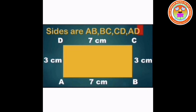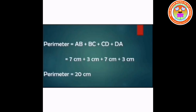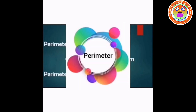For the rectangle, opposite sides are equal. Suppose AB is equal to 7 cm, then the opposite side DC is also 7 cm. BC is equal to 3 cm, so the opposite side AD is also 3 cm. Therefore, perimeter equals AB plus BC plus CD plus DA, which is 7 plus 3 plus 7 plus 3. Perimeter is equal to 20 cm.